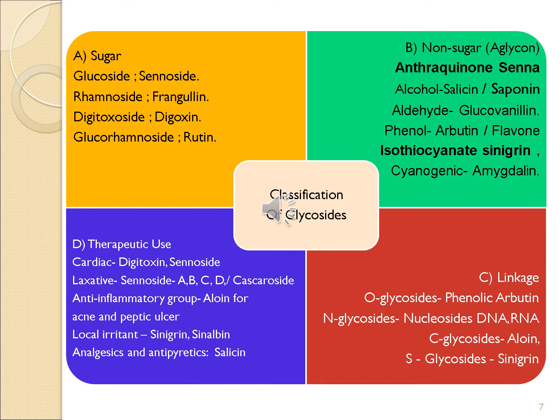This slide depicts the classification of glycosides. They are simply classified in four categories: A, based on sugar; B, based on non-sugar; C, based on linkage between sugar and non-sugar; and D, based on therapeutic uses. Based on sugar: if the glycoside contains glucose as a sugar, they are called glucoside — example senoside.